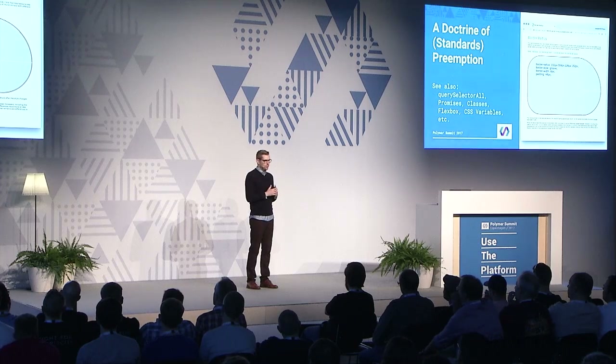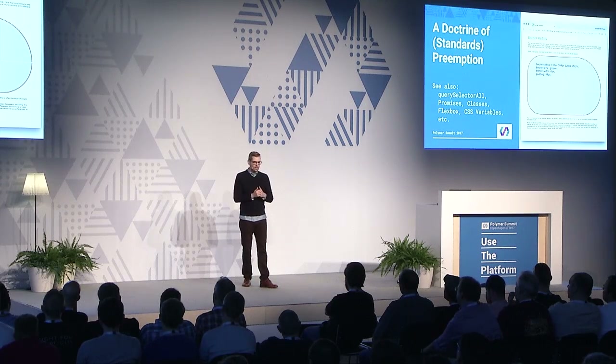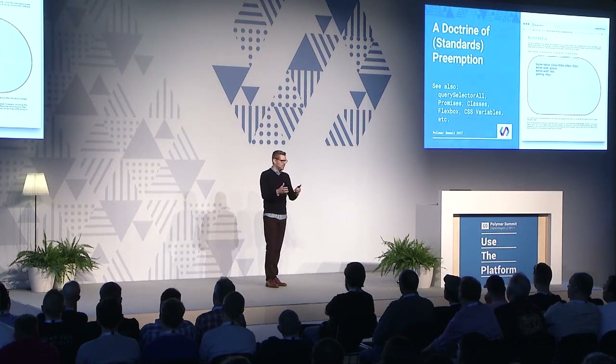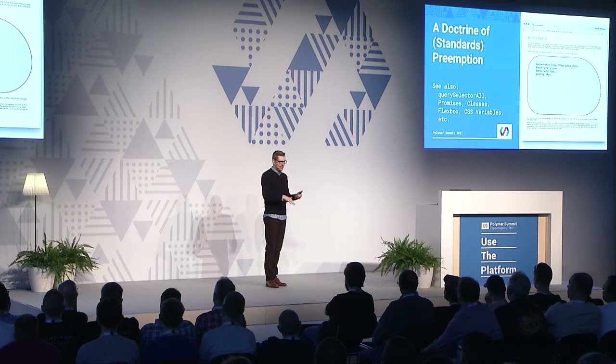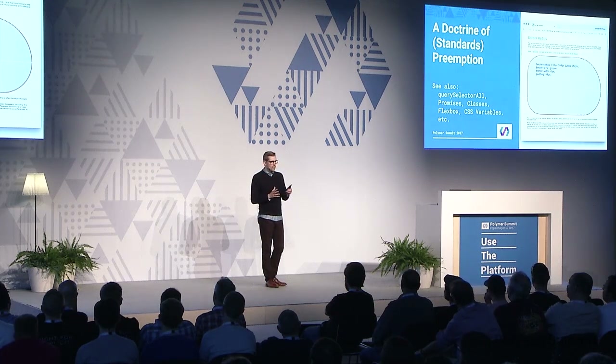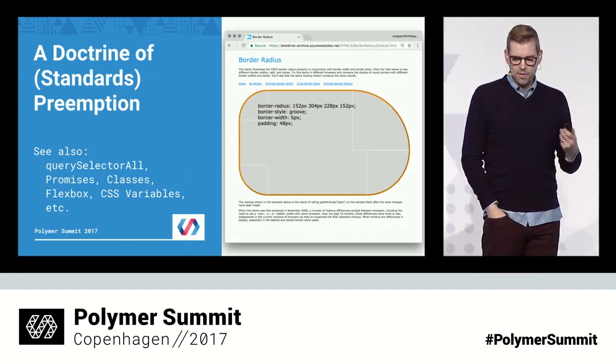It turns out this only works if we can get developers to use those features. Compelling new features don't need a lot of help — developers eventually realize that building and sending their own versions of a standardized feature down the wire is really expensive. This is a little like the way that in the US, state laws preempt city laws, or federal laws preempt state laws. When the bigger, slower-moving entity finally acts, it doesn't just add an umbrella to keep you out of the rain — it changes the weather entirely. I call this the doctrine of standards preemption.